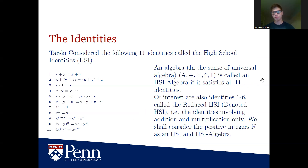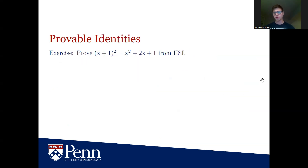During this talk we will consider the positive integers — the natural numbers from 1 and above — which we will denote N. We consider it both as a HSI algebra with the standard operations and as a reduced HSI algebra with just addition and multiplication. As an exercise, you can try to prove x plus 1 squared equals x squared plus 2x plus 1 from the high school identities.